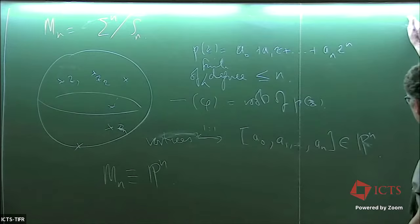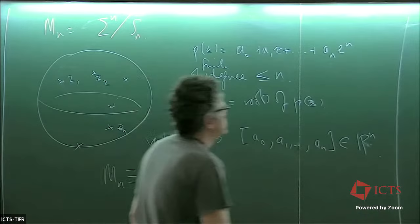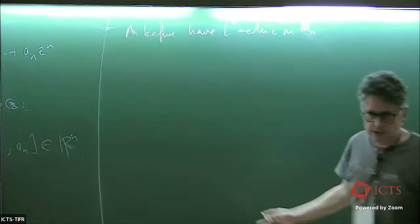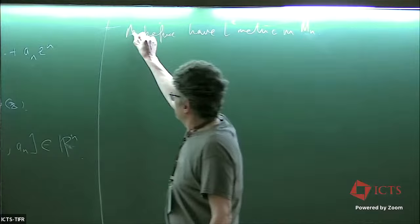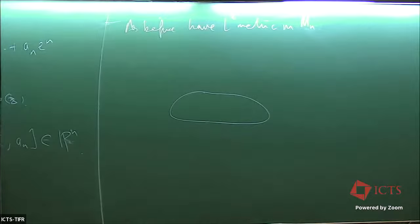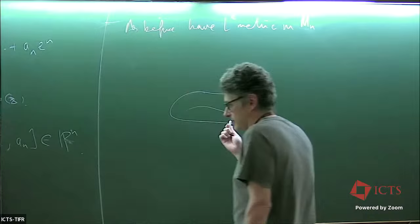That's the moduli space, and as before we have an L² metric on it. You can define it by a Kähler quotient construction, but let's think about it more concretely. A Riemannian metric assigns lengths to tangent vectors — anything which does that in an appropriate way defines a Riemannian metric. So let's take a curve in our moduli space.